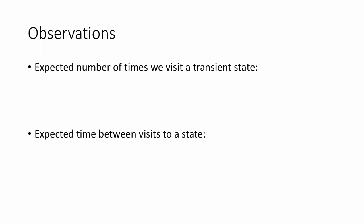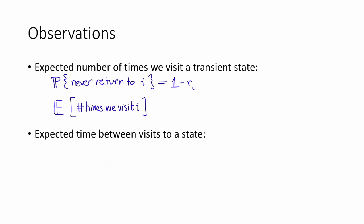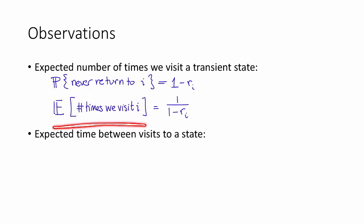We can make a few observations about transient and recurrent states. First, let's consider the number of times that we visit a transient state in expectation. By definition, the probability that we never return to a transient state i is equal to 1 minus r sub i. So the expected number of times we visit i is equal to 1 divided by 1 minus r sub i. That's because the number of times we visit i is a geometric random variable — every time we visit i, we flip a 1 minus r sub i biased coin, and if we get heads, we never return.